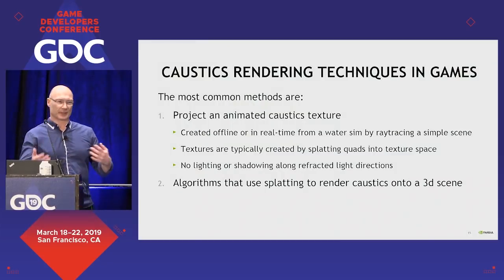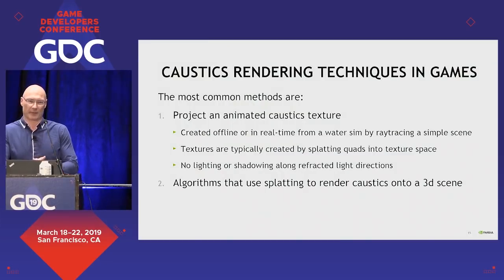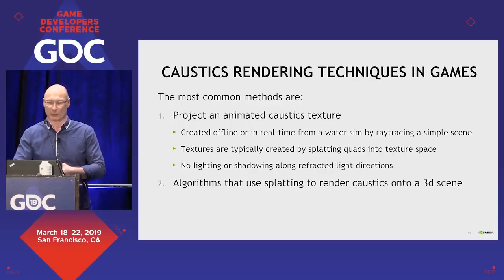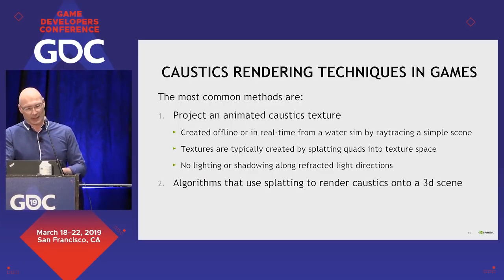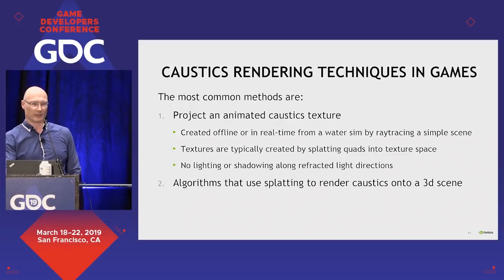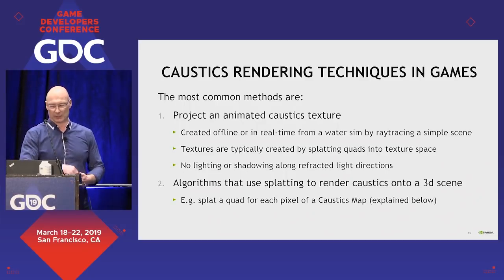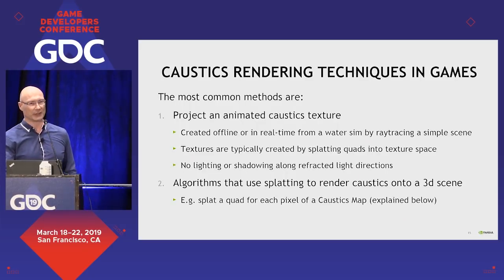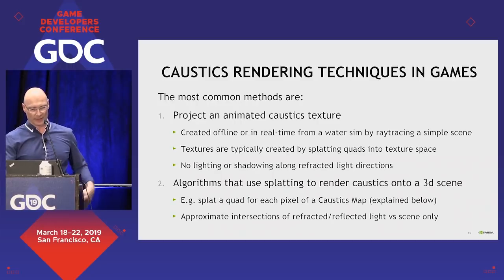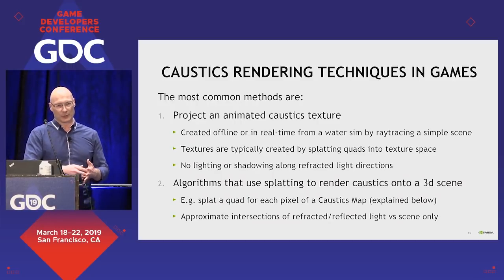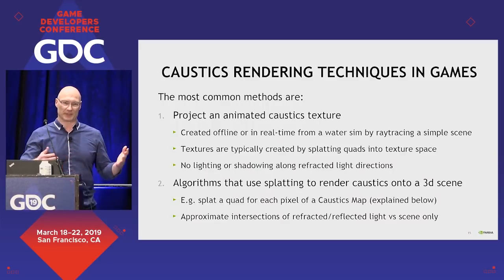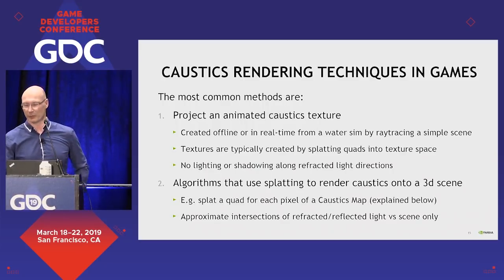Because this is a common shortfall, people have been smart about it and asked what can we do to make this more realistic. There are algorithms that use splatting not onto a flat plane or simplified scene, but that try to splat properly onto the full 3D scene. There's a Caustics Map paper I'll reference later and explain in more detail. In the end, all these mechanisms usually use just approximate intersections, which obviously don't give you the full and real result.